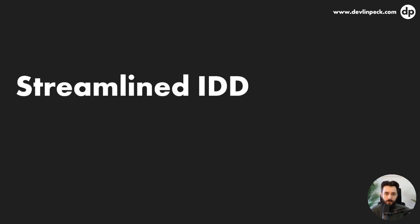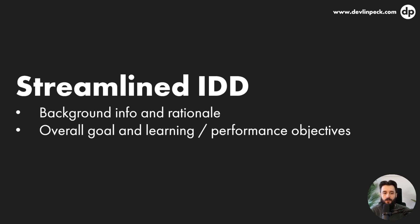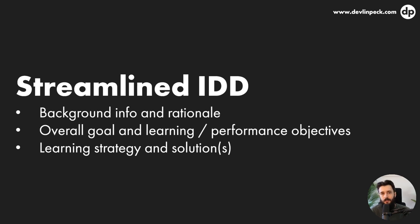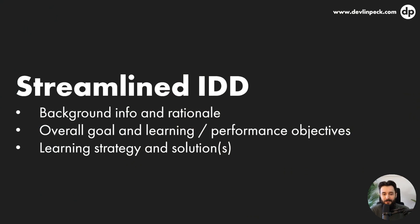Here is the streamlined approach to an instructional design document as promised. I think background info and rationale would be important just to justify the existence of this learning program. You'll want to include the overall goal as well as the learning and performance objectives — what are we trying to accomplish and what do people need to know or be able to do? And then what learning strategies are we using and what solutions are we creating? What does the solution consist of and what strategies ensure it's effective? Those three bullet points are really all we need on an instructional design document.